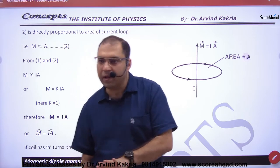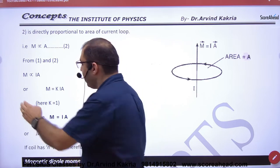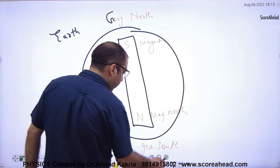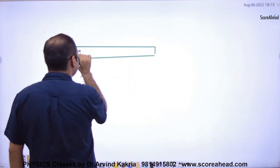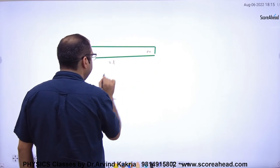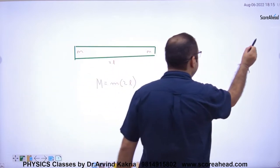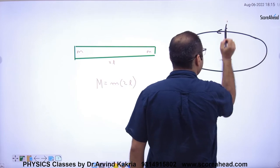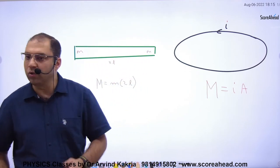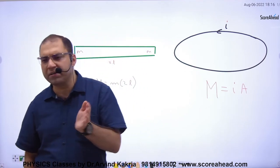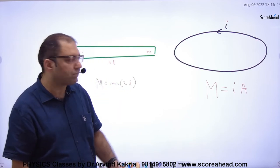Now there are two types of problems. Either you will be given a bar magnet with pole strength small m and length 2L — then capital M equals small m into 2L. Or you will be given a current-carrying loop — then capital M equals current I into area A. Both formulas are different. If it is a bar magnet, use the first formula; if it is a current-carrying loop, use the second formula.